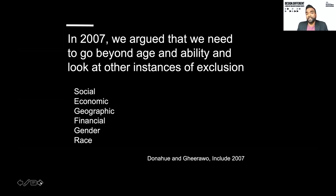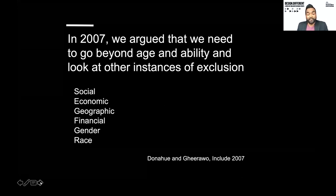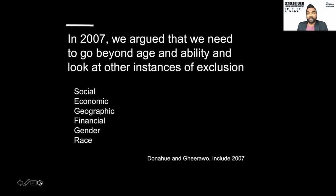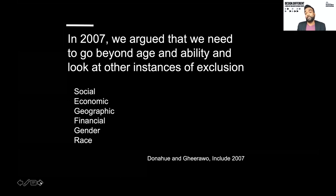In 2007, Sean and I argued that we needed to look beyond age and ability with our inclusive endeavors and look at other instances of exclusion — social, economic, geographic. Geography is important: if you fall ill in one part of a city, you'll get a different level of healthcare than in another. There's financial exclusion, exclusion by gender and by race — and yes, there is more than two genders.